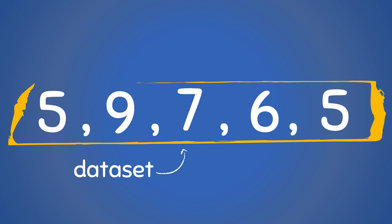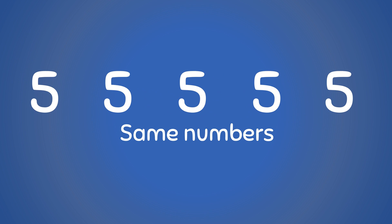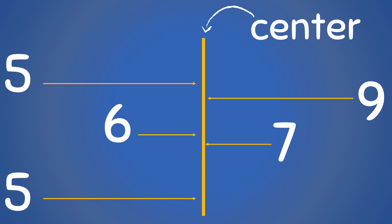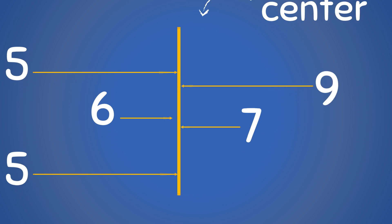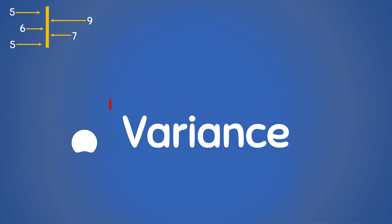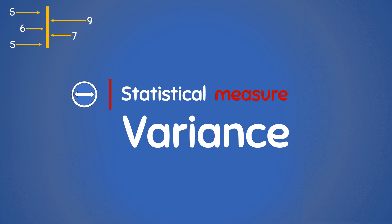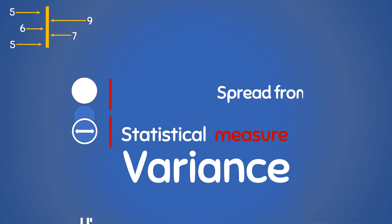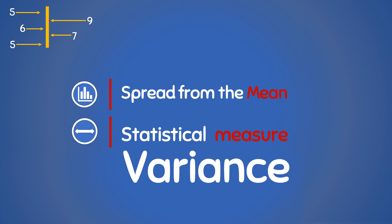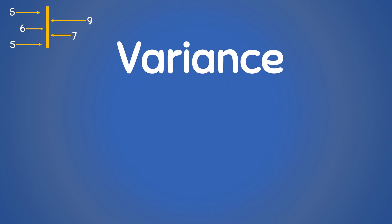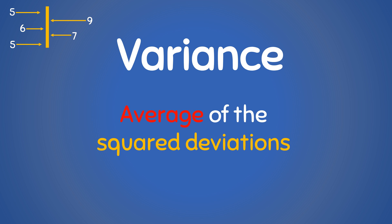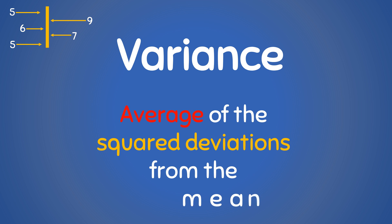When we have numbers in a data set, except if all the numbers are the same, these numbers are usually spread out from each other and from their center. The variance is a statistical measure that tells us how far all the numbers in the data set are spread out from the mean value of the data set. It is obtained by finding the average of the squared deviations of all data points from the mean of the data.